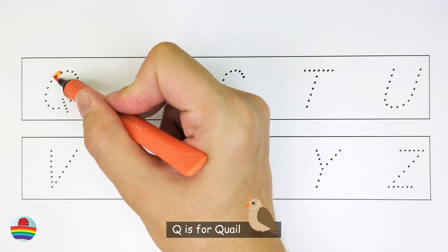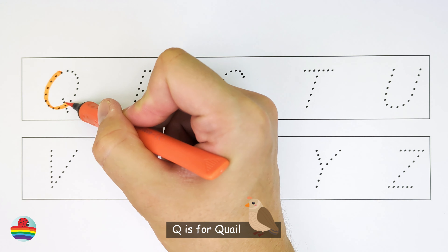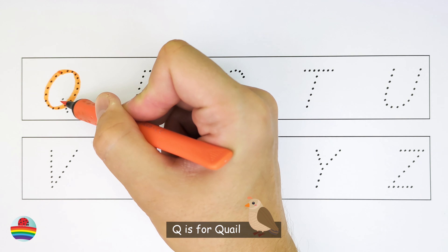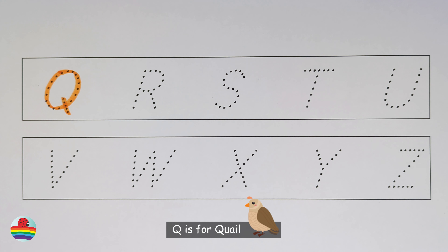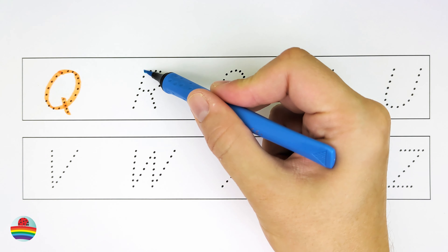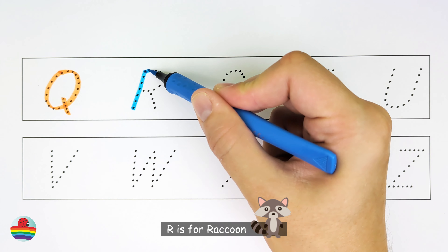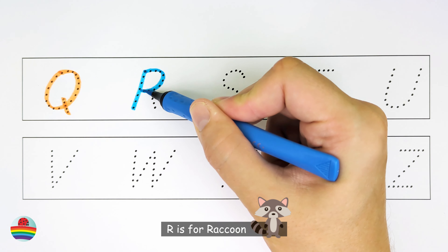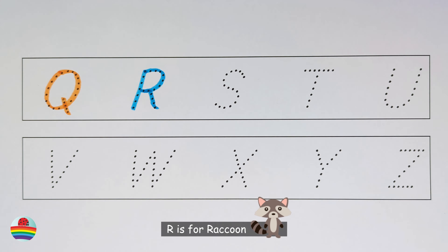Q. Q is for quail. Q. R. R is for raccoon. R.